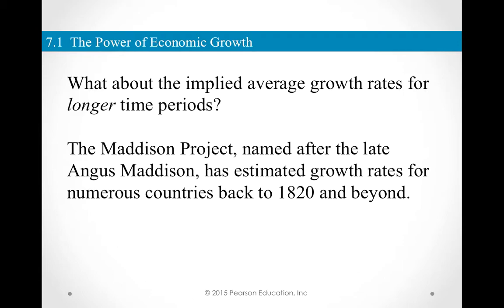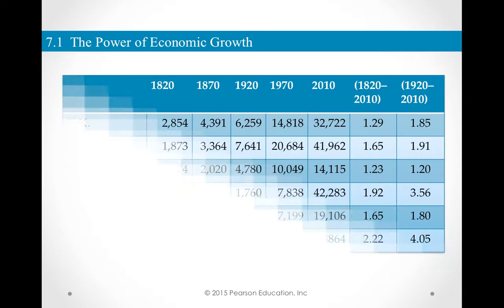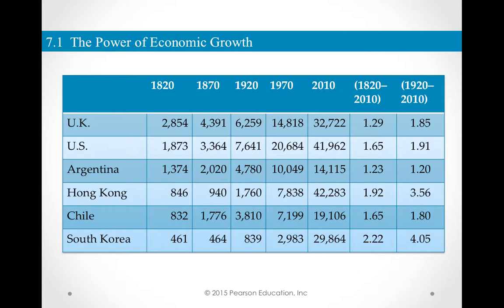What about a longer time period? We're going to look at data collected by Angus Maddison, after whom the project is named the Maddison Project. He estimated data for a very long historical period. Looking at data after 1820: the UK, for example, was the richest country in 1820 with per capita real GDP of $2,854. In 2010, its per capita real GDP went up to $32,722. The implied growth rate over the full 190-year period was 1.29%, and for a 90-year period it was 1.85%.